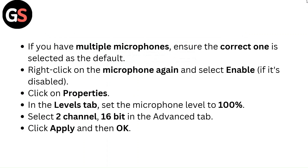If you have multiple microphones, ensure the correct one is selected as the default. Right click on the microphone again and select enable if it is disabled. Click on properties, in the levels tab, set the microphone level to 100%. Select two channels 16-bit in the advanced tab, click apply and then ok.